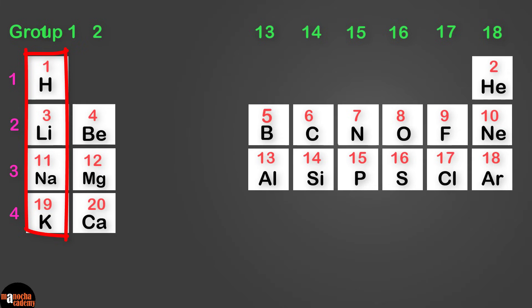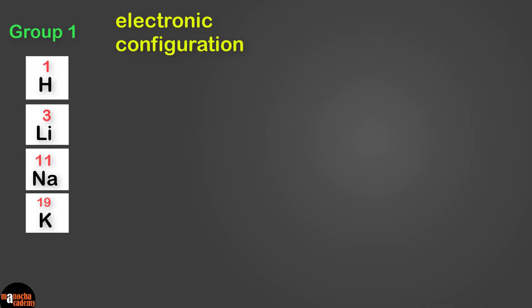Let's start with the group 1 elements: hydrogen, lithium, sodium and potassium. They have atomic numbers of 1, 3, 11 and 19. Let's try to write down their electronic configurations. Hydrogen is simple - it just has 1 electron.